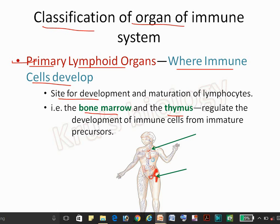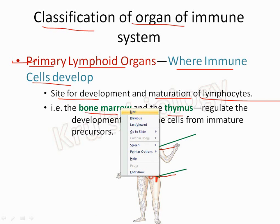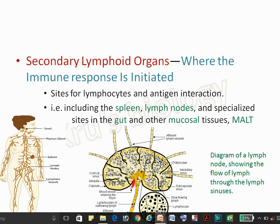The primary lymphoid organ is the site for development and maturation of lymphocytes. Here you can see that the bone marrow is located here and the thymus is located here. The secondary lymphoid organs are responsible for the immune response.